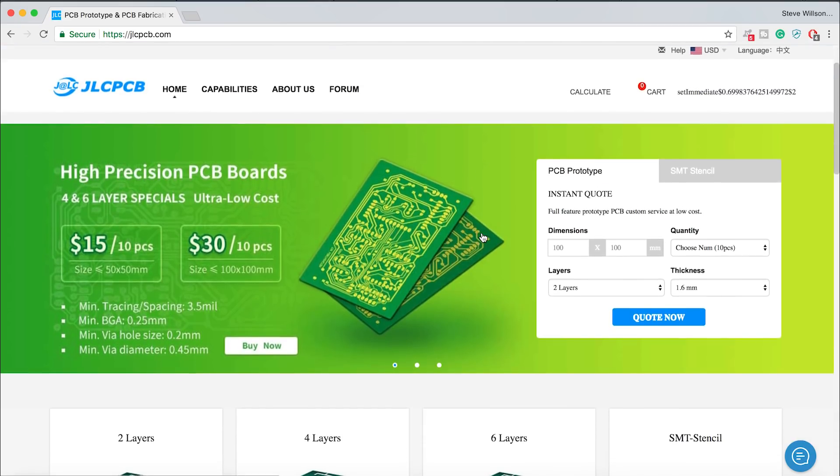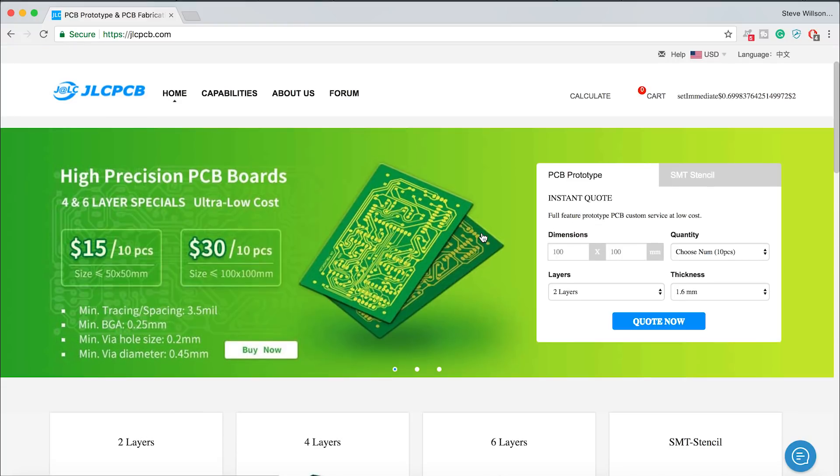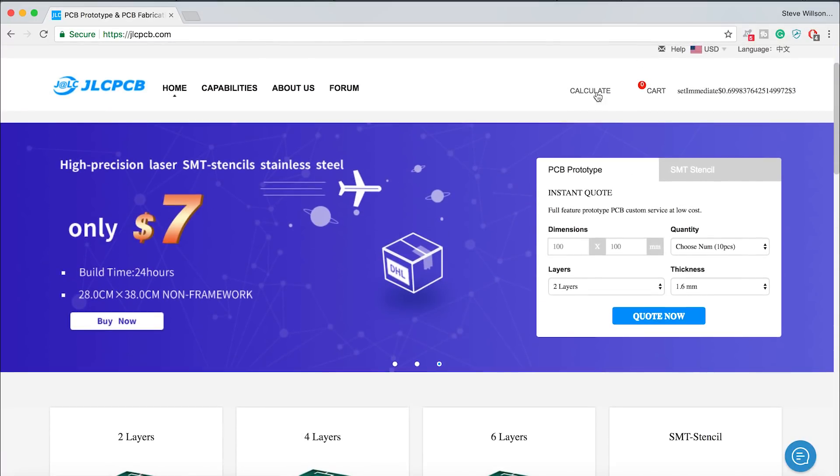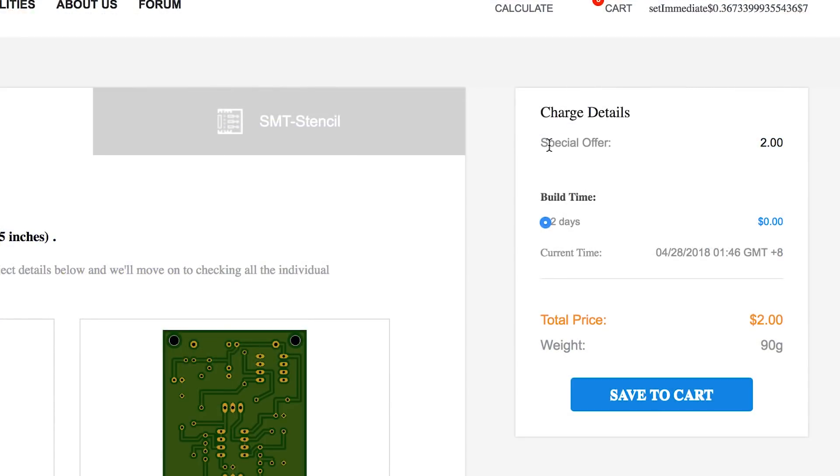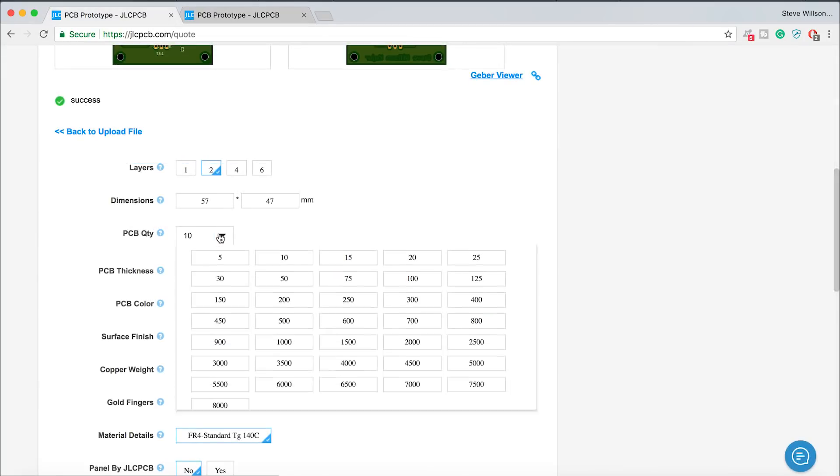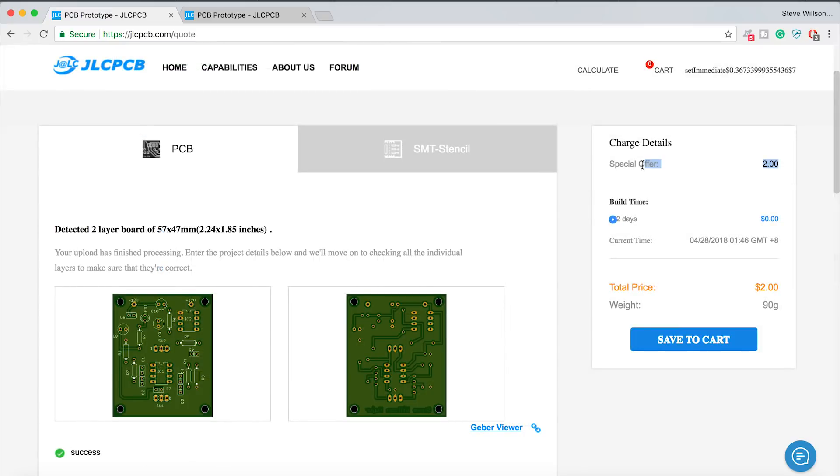I visited JLCPCB.com. They are the world's largest PCB manufacturer. They offer 2 layer, 4 layer, 6 layer and SMT stencil. Upload your Gerber file today and get 10 PCBs just for $2. I just uploaded my Gerber files, did a quick inspection how my PCB is going to look like, and then I selected the quantities and ordered the PCBs.